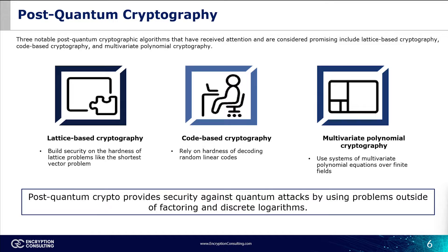A second algorithm is code-based cryptography — a cryptographic paradigm that relies on the hardness of decoding random linear codes. This approach utilizes error-correcting codes, which are mathematical constructs used to detect and correct errors in transmitted data. In code-based cryptography, security is based on the difficulty of decoding a randomly generated linear code without knowledge of the code's structure. This hardness is attributed to the combinatorial properties of error-correcting codes, making them resistant to various attacks, including those from quantum computers, and a viable option for post-quantum cryptographic schemes.